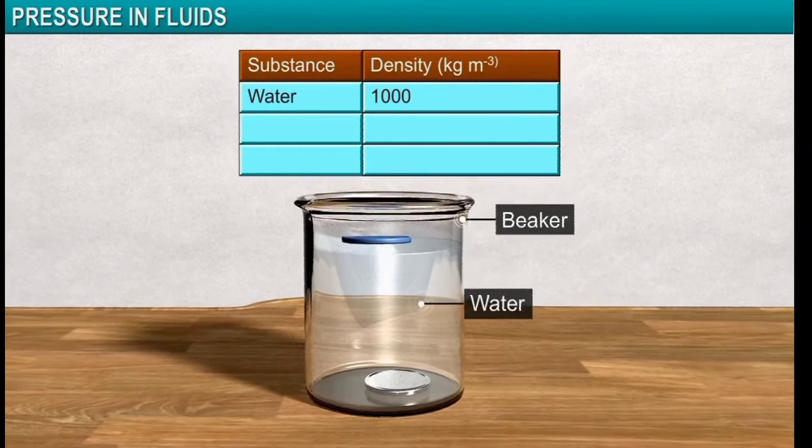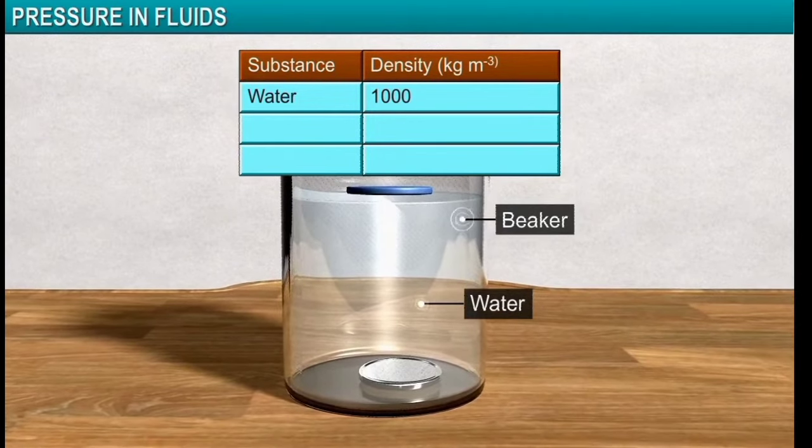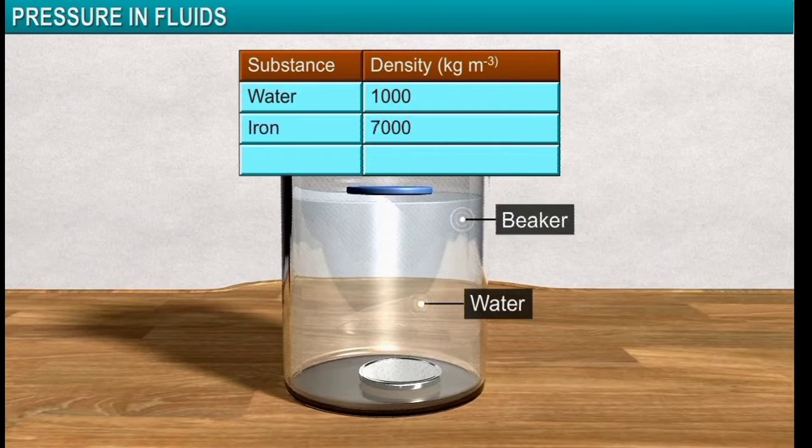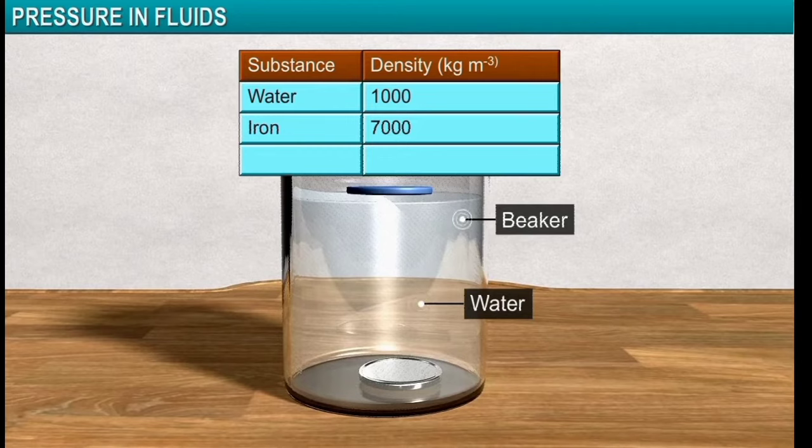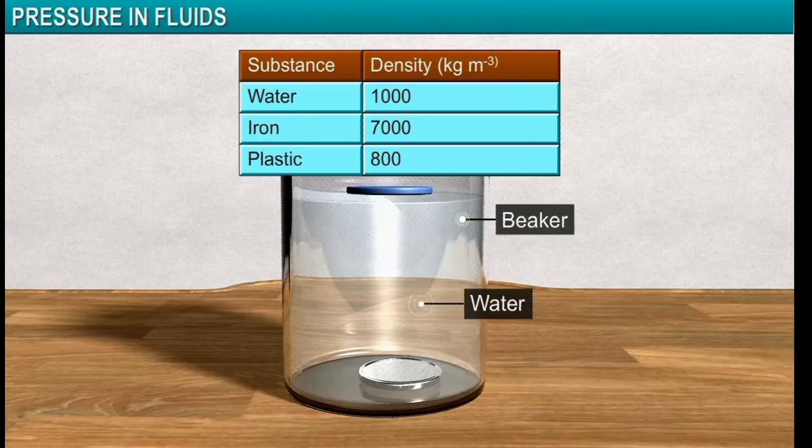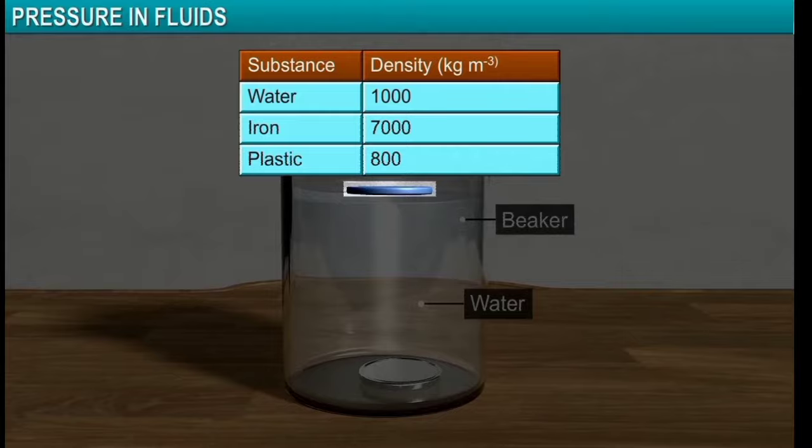The density of water is 1,000 kg per cubic meter. The density of iron is 7,000 kg per cubic meter. The density of plastic is 800 kg per cubic meter. The plastic coin floats and the metal coin sinks.